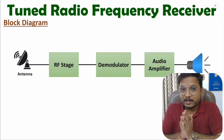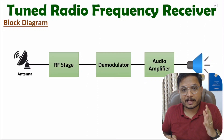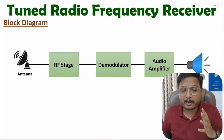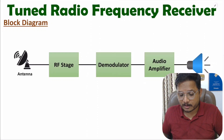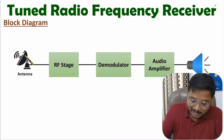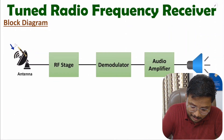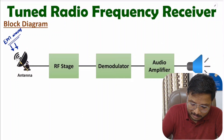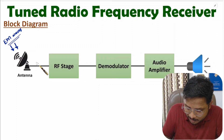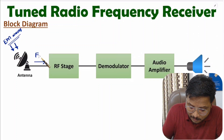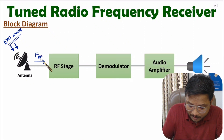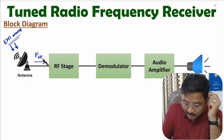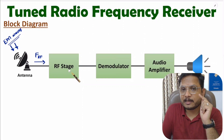Hello friends, welcome to Engineering Funda family. In this video I will explain the tuned radio frequency receiver with great clarity. In this block diagram, the first element is the antenna, which receives electromagnetic waves and provides an RF signal. The frequency of this received signal is the RF frequency.